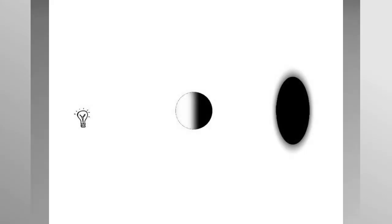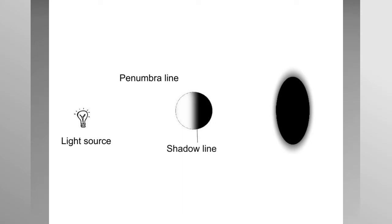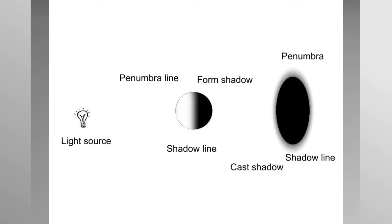In Drawing Light and Shade: Understanding Chiaroscuro, Savardi effectively explains form and cast shadow with a light source — the penumbra line around the outer edge of the cast shadow where the darkness is less intense, the shadow line, form shadow, the penumbra, cast shadow, and shadow line from the shadow cast by the object onto a surrounding surface.